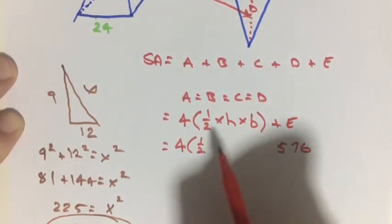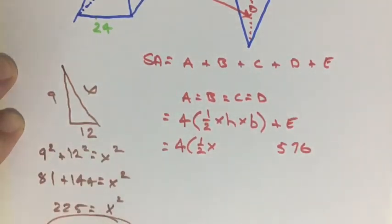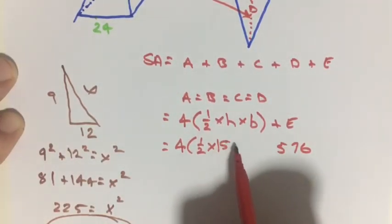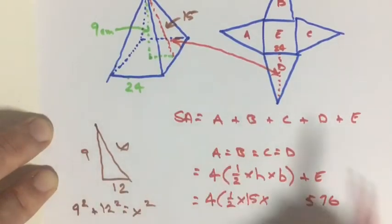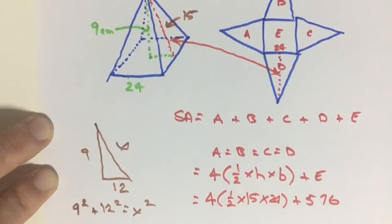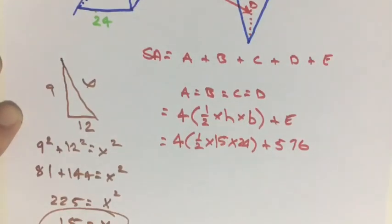4 times 1 half times the height which is 15 times the base of our pyramid which is 24. And all that plus 576.